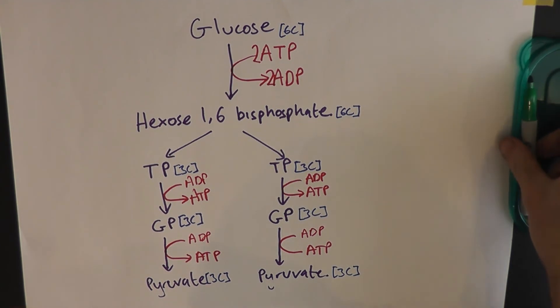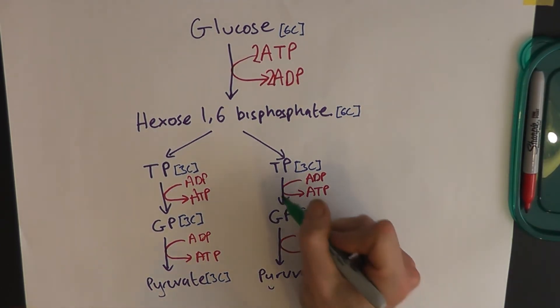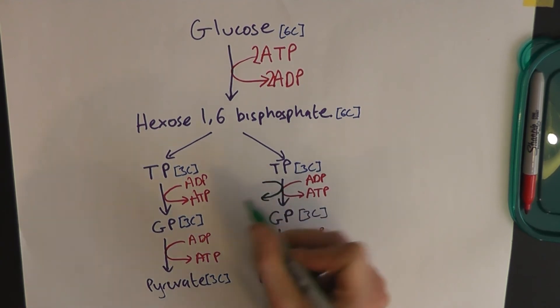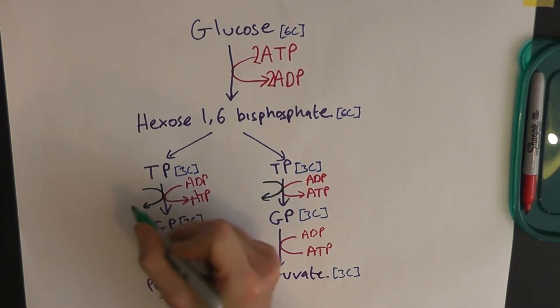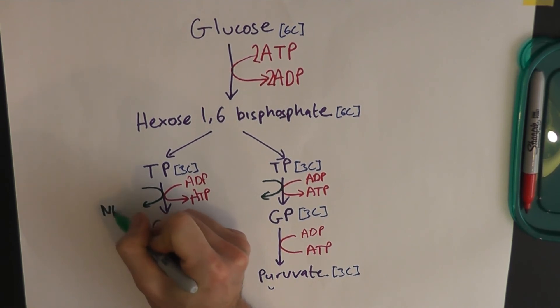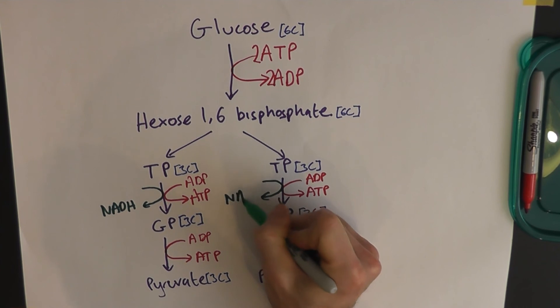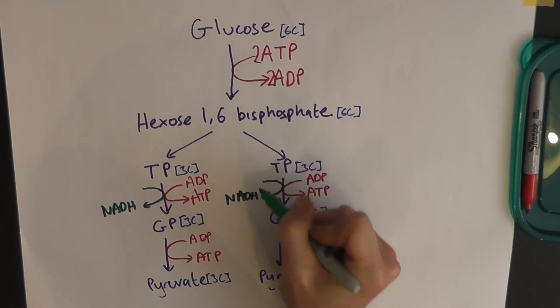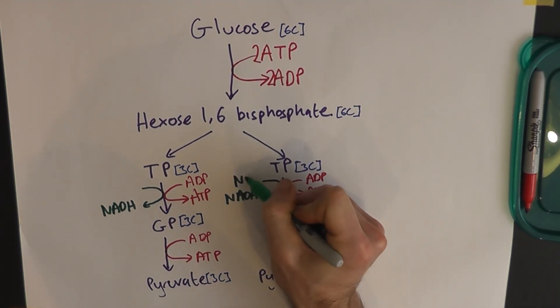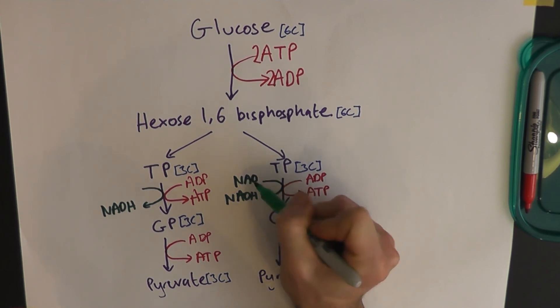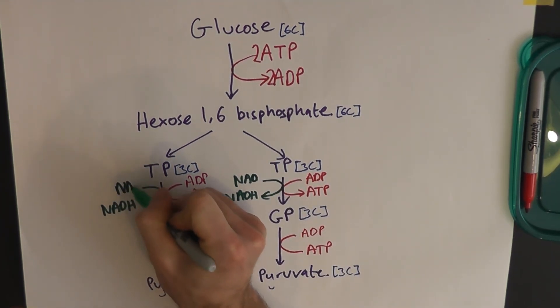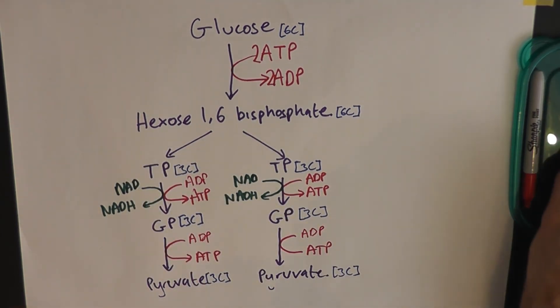And you might think we're finished but we're not because there is another useful product that we get out. The final useful product that we get out of glycolysis is something called NADH, or reduced NAD. And this is a hydrogen carrier with hydrogen attached. And we're going to use that in the final stage of cellular respiration, which is ATP synthesis and electron transport. But more about that later.